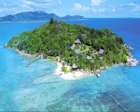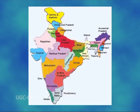Concept of endemism. Endemism is the ecological state of a species being unique to a defined geographical location such as an island, nation, country, or other defined zone or habitat type. Organisms that are indigenous to a place are not endemic to it if they are also found elsewhere. The extreme opposite of endemism is cosmopolitan distribution.